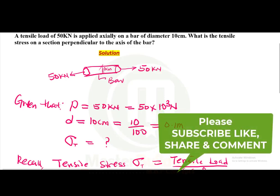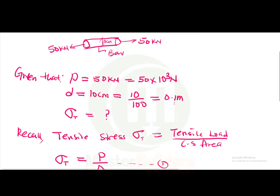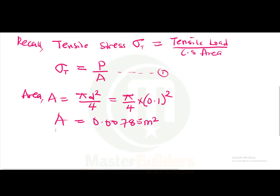Now we know the area to be 0.00785, and the tensile load is given as 50 multiplied by 10 raised to the power of 3 newtons. Then we can now obtain the tensile stress using equation 1. It's as simple as this, guys. So you understand that these problems are very easy.